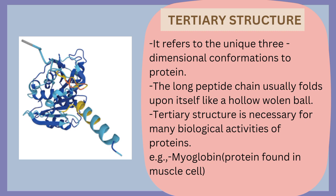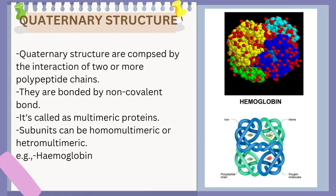The tertiary structure is the three-dimensional conformation of a protein. It is formed by the condensation of a long peptide chain, which usually folds upon itself like a hollow woolen ball. The tertiary structure is necessary for many biological activities of proteins. An example of a tertiary protein is myoglobin, which is present in our muscle cells.